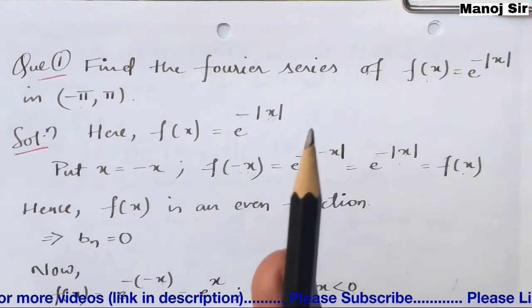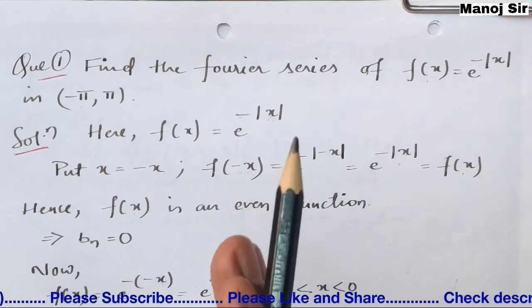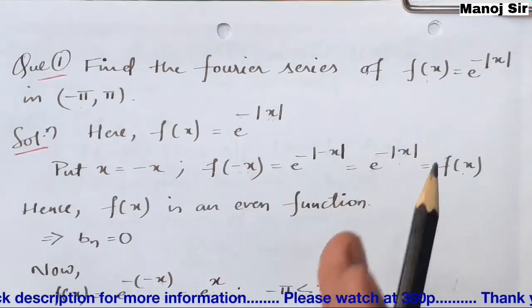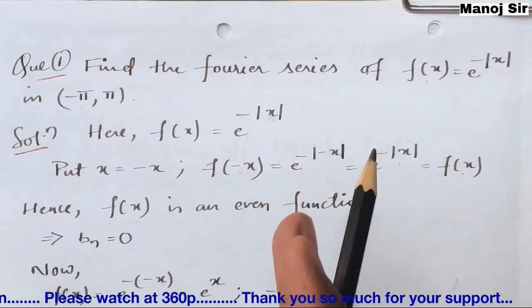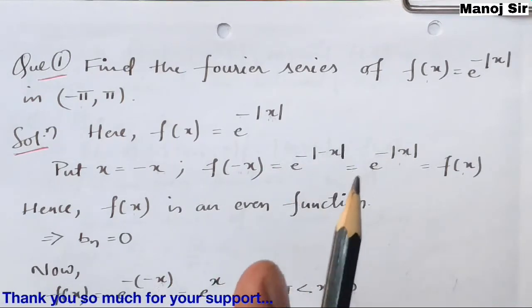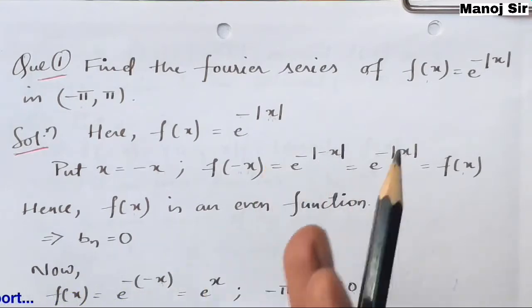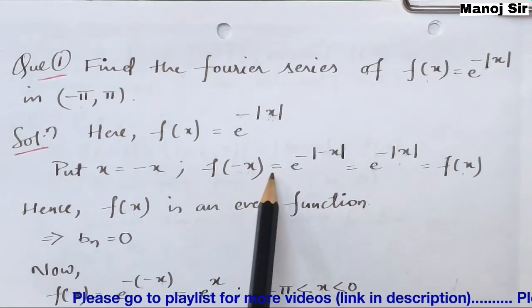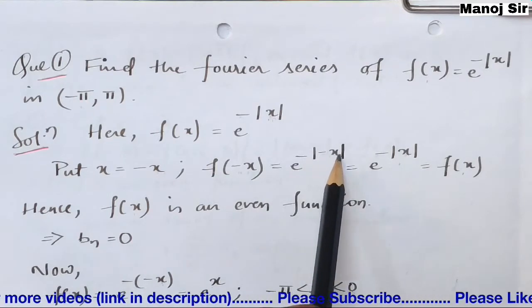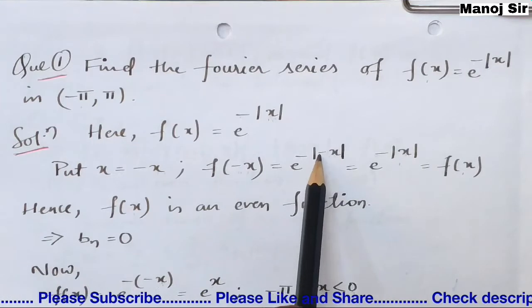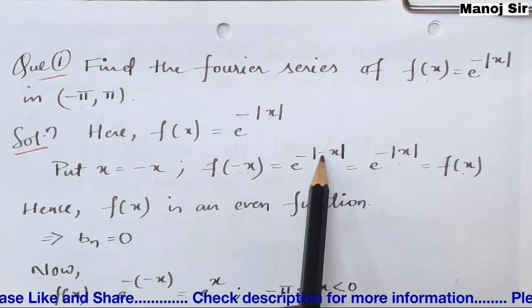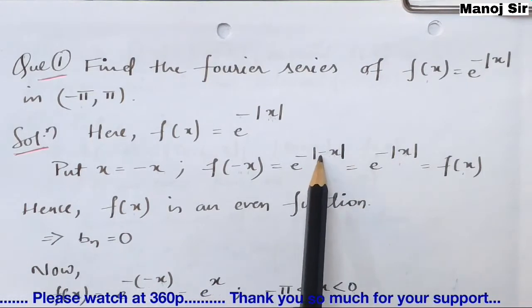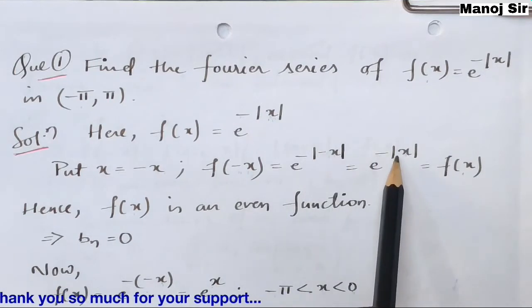To check whether the given function is even or odd, we put x = −x. If f(−x) = f(x), the function is even. If f(−x) = −f(x), the function is odd. So here, putting x = −x: f(−x) = e^(−|−x|). Since the negative is inside the mod, it can be removed — mod of minus x equals mod of x.